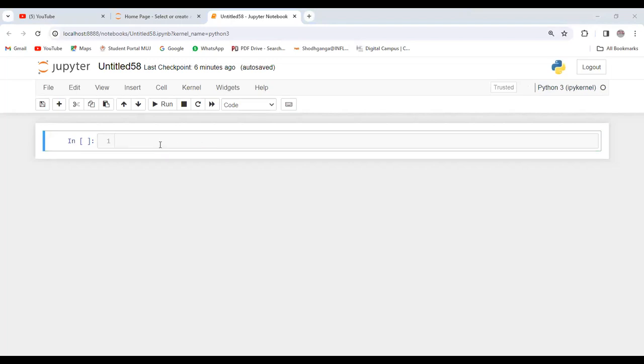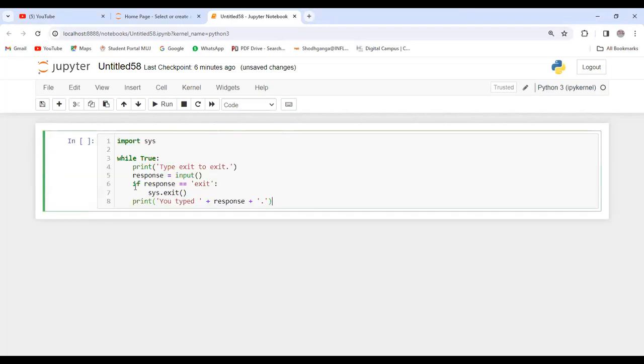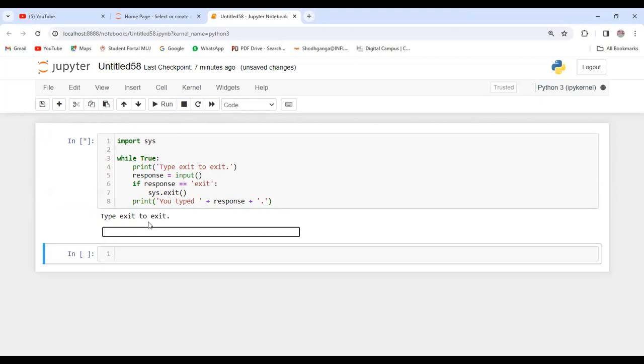Let me open the Jupyter notebook. I'm going to type the program. Let's see how the sys.exit function operates. We already explained the program, so now let me run this.